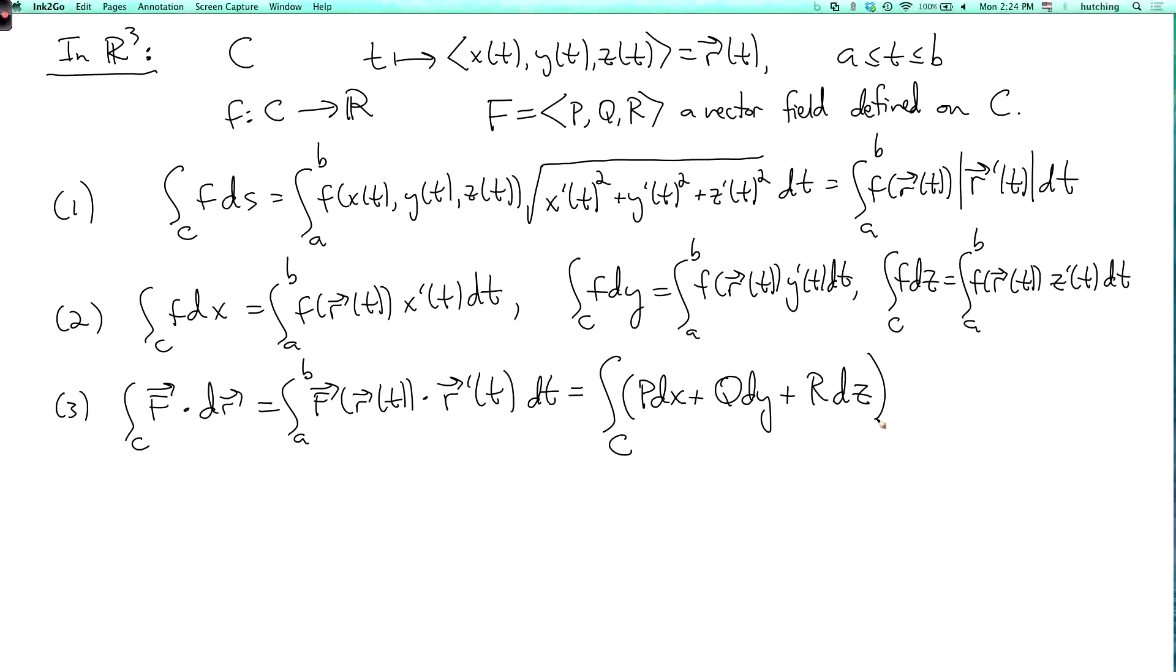And let's remember to what extent these depend on the parametrization. The integral with respect to arc length, just as in the two-dimensional case, is independent of the parametrization as long as you don't backtrack. Integrals of f dx, f dy, and f dz don't depend on the parametrization and you can even backtrack. However, if you switch the orientation, you multiply these integrals by minus one. It's the same deal for the integration of a vector field because that's just a sum of integrals with respect to dx, dy, and dz. So the integral over minus C of F dot dr is minus the integral over C of F dot dr.